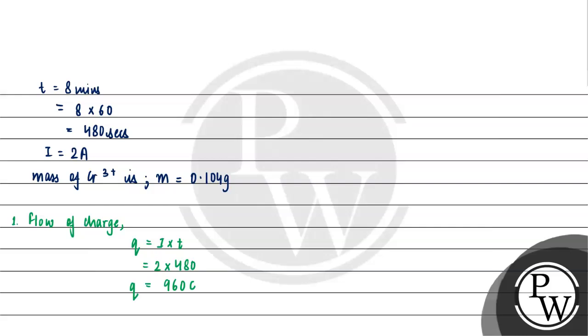Now, converting the flow of charge into Faraday. We divide by Faraday's constant, which is already provided in the question: 960 ÷ 96000 = 0.01. So moles of electrons is 0.01 mol.